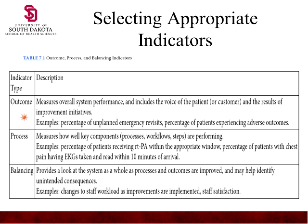There's no such thing as one panacea indicator — no single indicator fixes everything or tells you everything. You have to have multiple indicators, but they must be dynamic, significant, and relevant. Outcome indicators measure what happens after you've done everything — overall system performance, including the voice of the patient and results of improvement initiatives, such as unplanned emergency visits or the percentage of patients experiencing adverse outcomes.